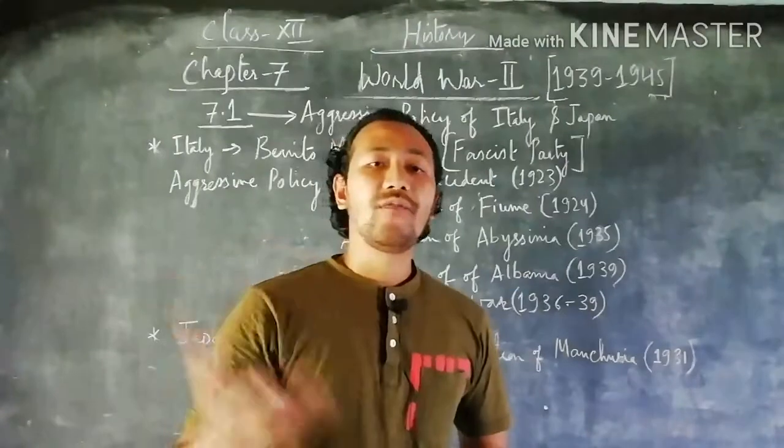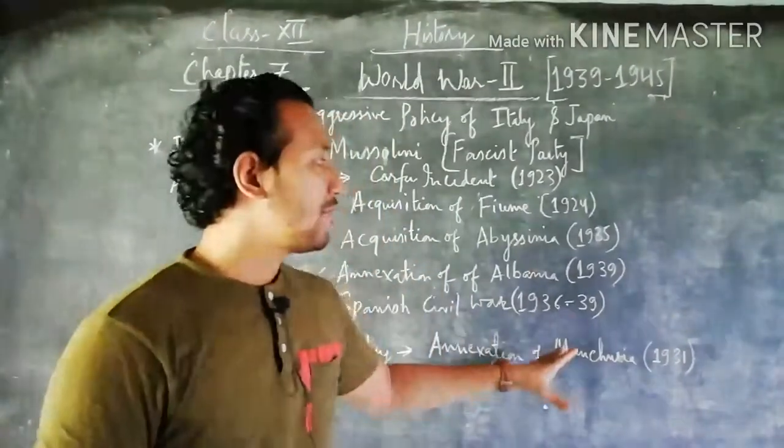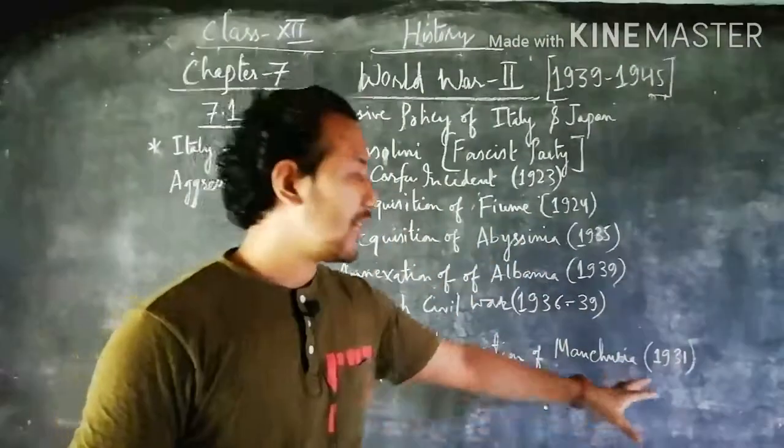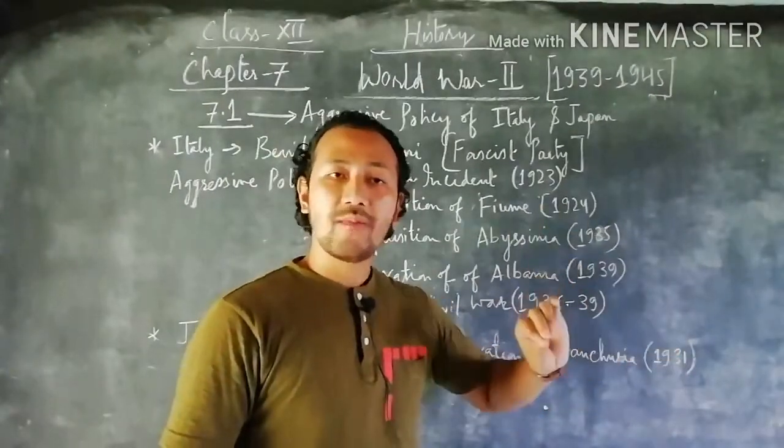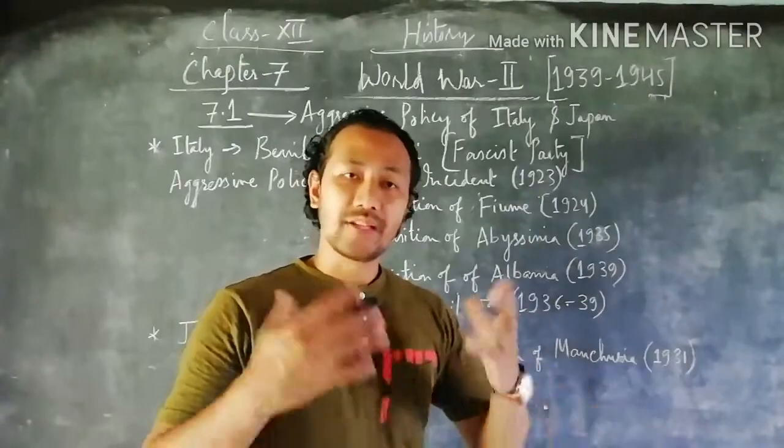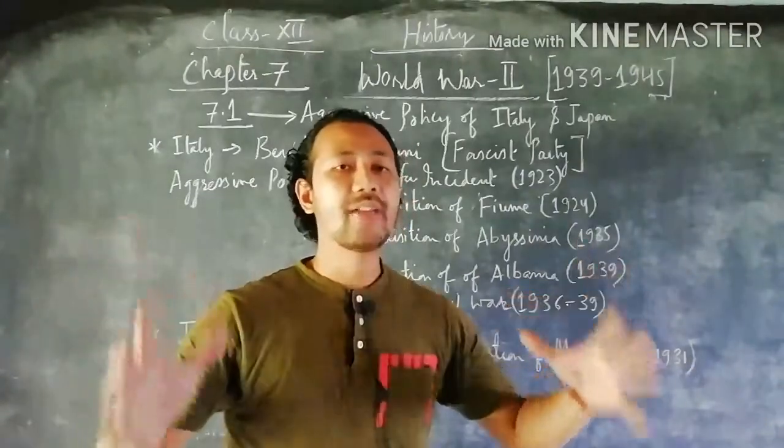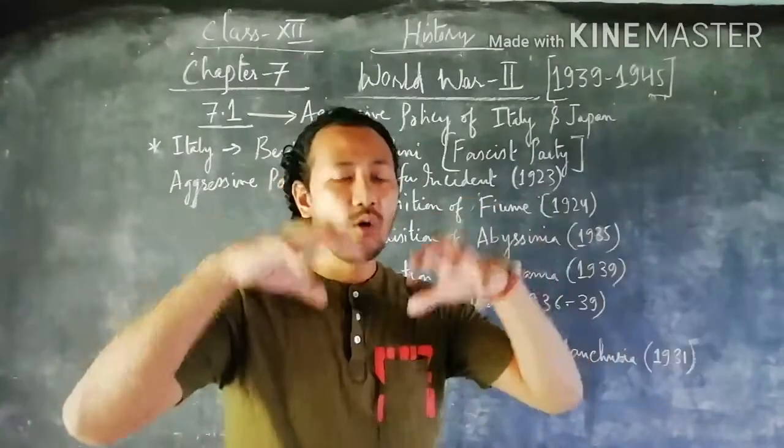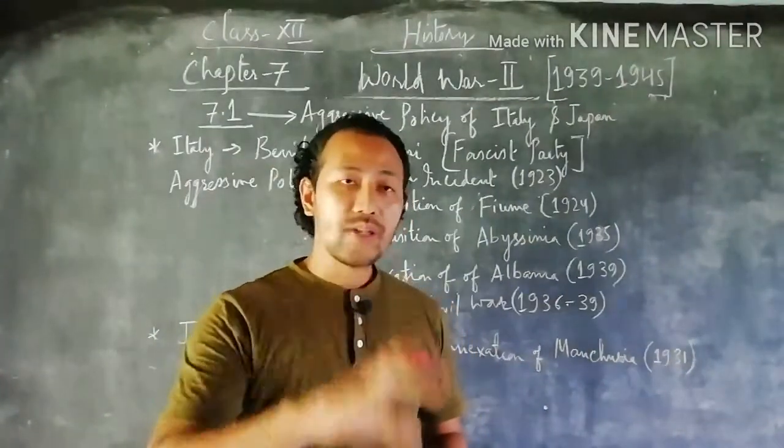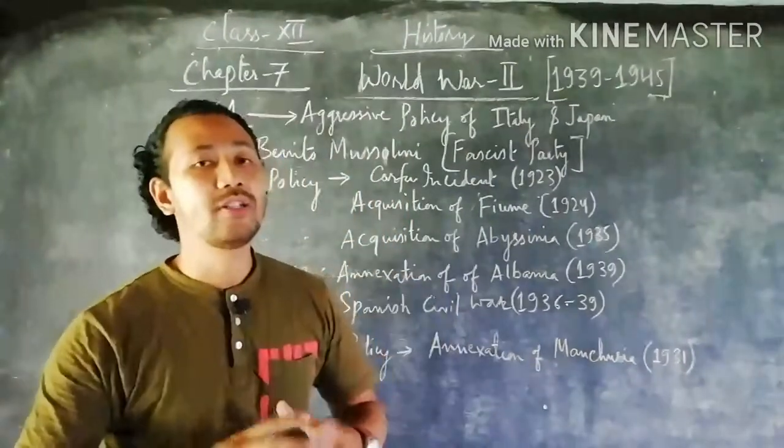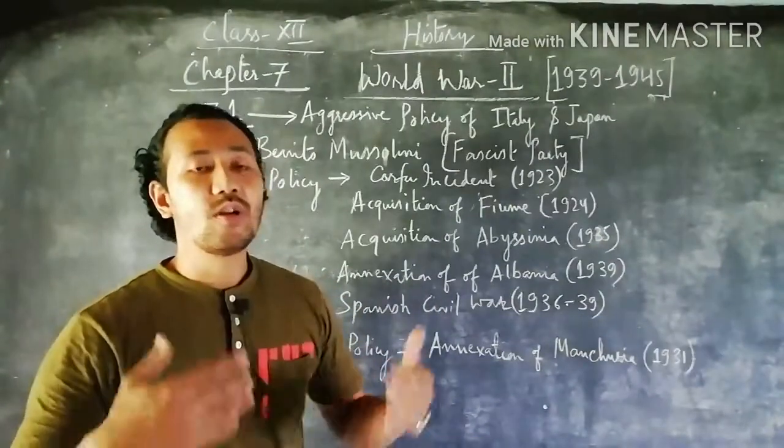During that time the League of Nations was already there. We are talking about the years 1931 and 1933. The League of Nations' main aim was to maintain peace and security, to make all nations under one umbrella, and to prevent future wars.